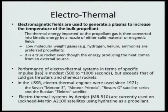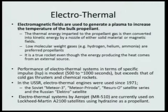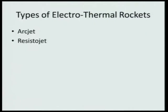In the USSR, electrothermal engines were used since 1971. The Soviet Meteor 3, Meteor Piroda, Resorso Satellite series, and the Russian Electro Satellite all used electrothermal engines. Electrothermal systems by Aerojet are currently being used on Lockheed Martin A2100 satellites, which use hydrogen as propellant. There are typically two types of electrothermal rockets: the arc jet thruster and the resistor jet thruster.